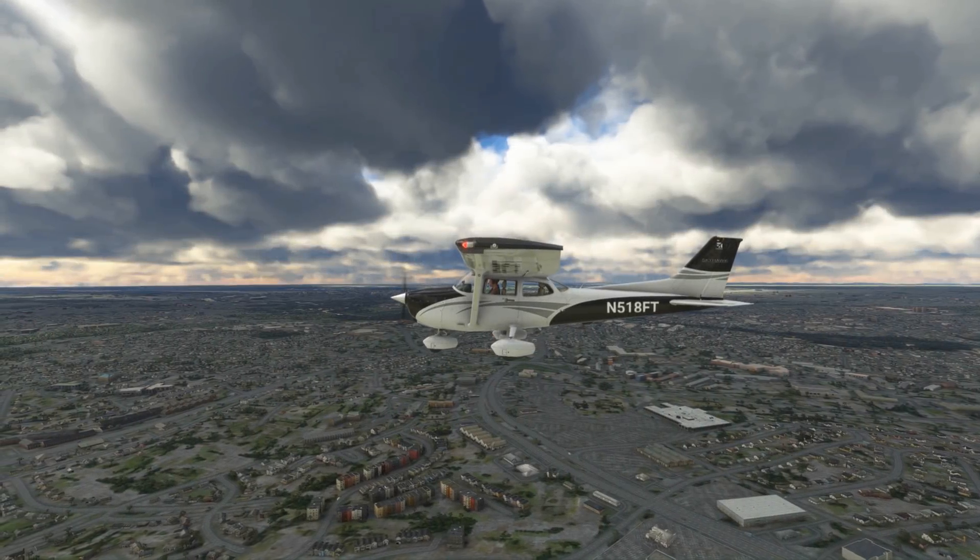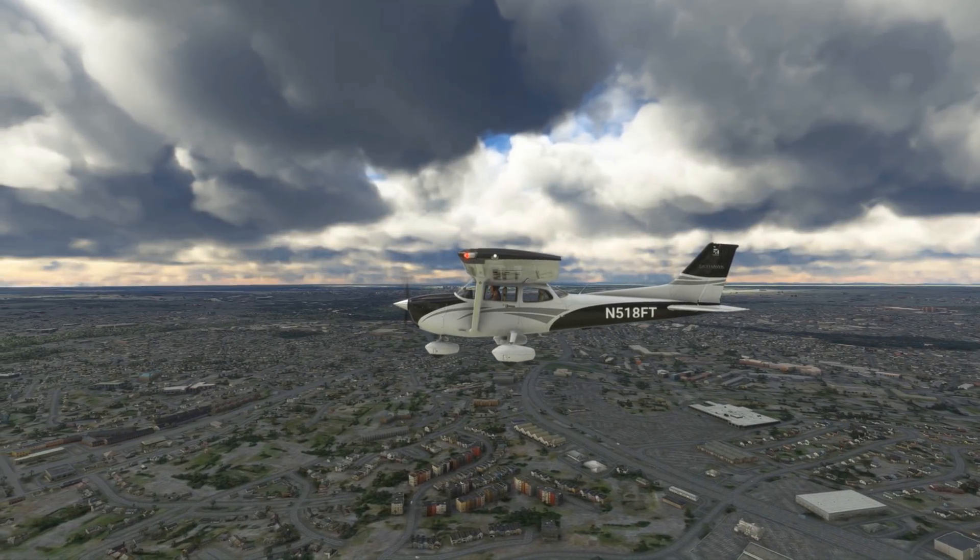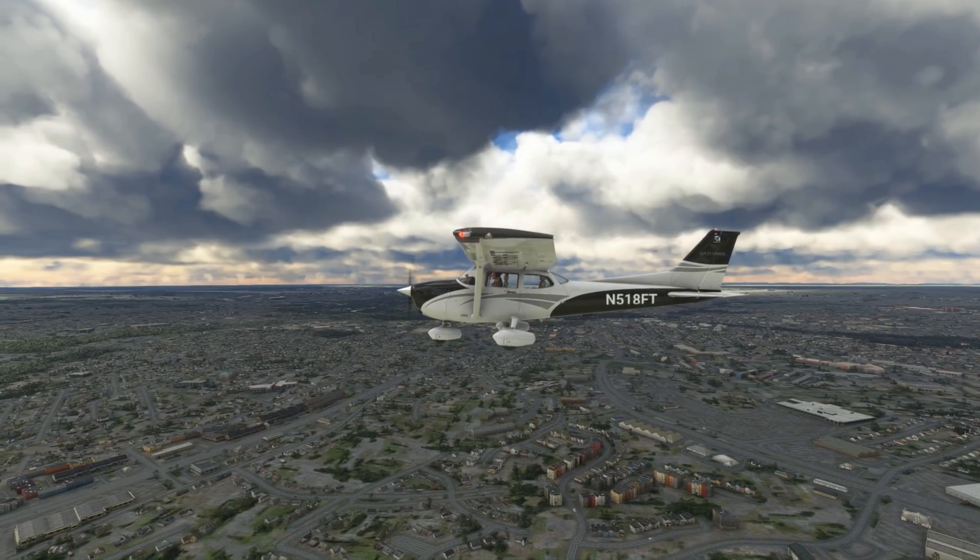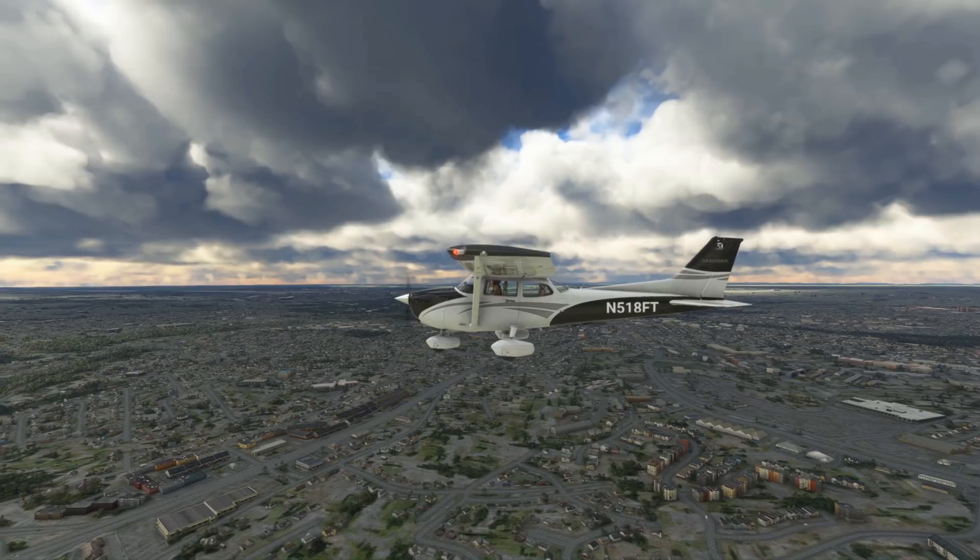When we're in straight and level, unaccelerated flight, our aircraft is said to be in equilibrium. Our rate of climb or descent is constant, or in this case is zero, and we're holding altitude.